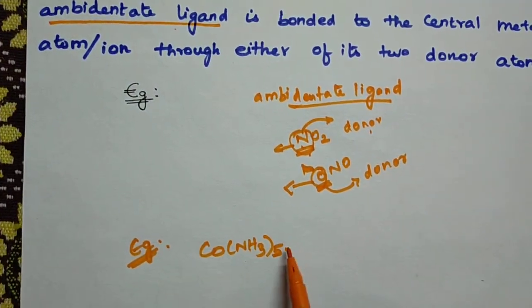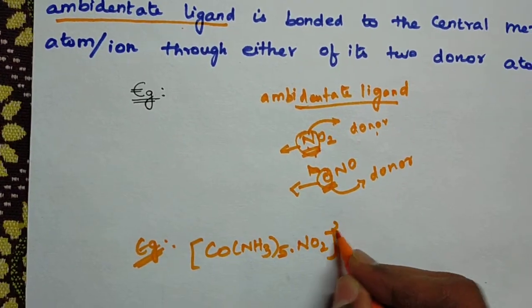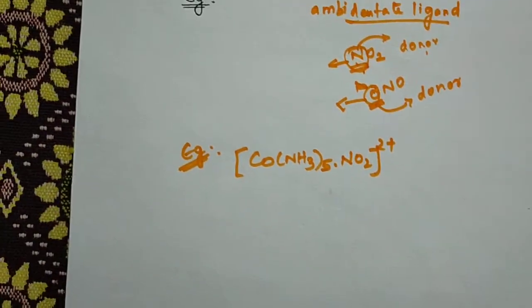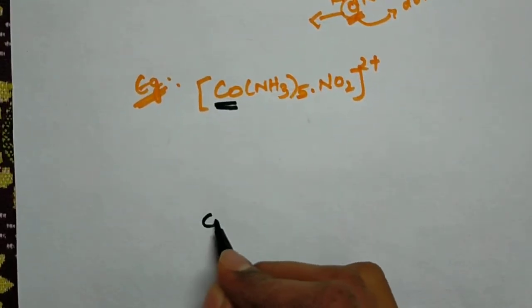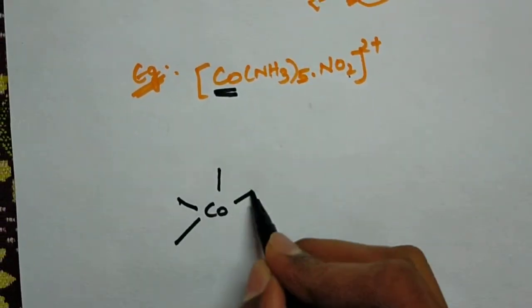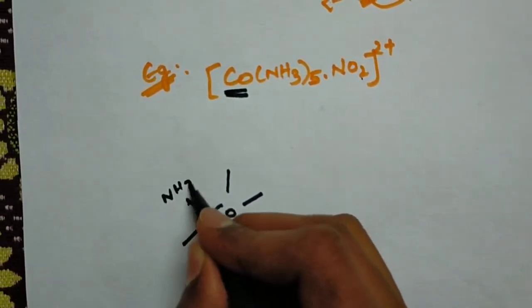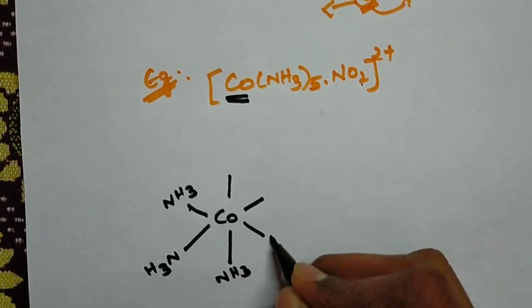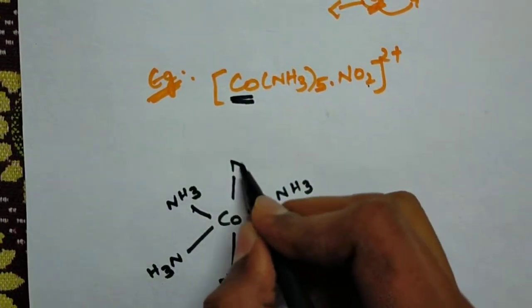So for the complex [Co(NH3)5NO2]2+ with the NO2 ligand: if bonded through nitrogen it gives one structure, and if bonded through oxygen it gives the other isomer. The cobalt is the central metal. The NO2 group can attach via N or via O to the central metal, giving two different linkage isomers.